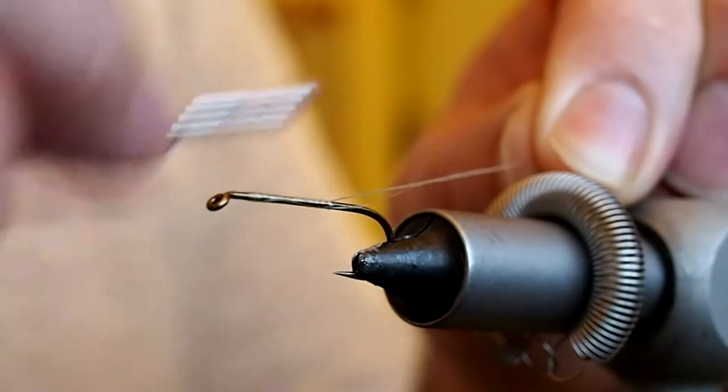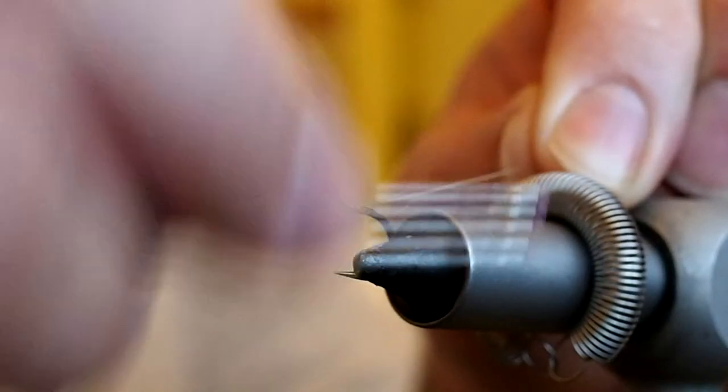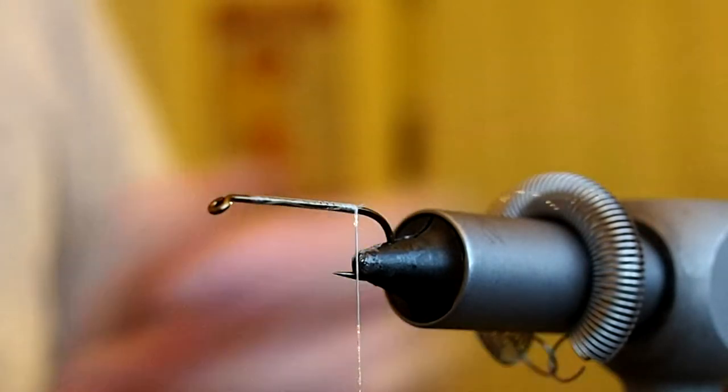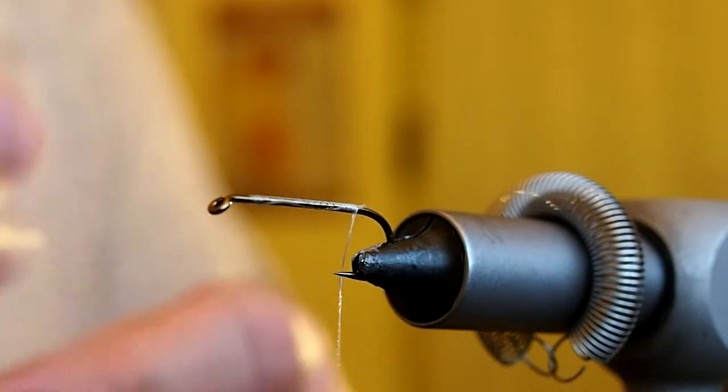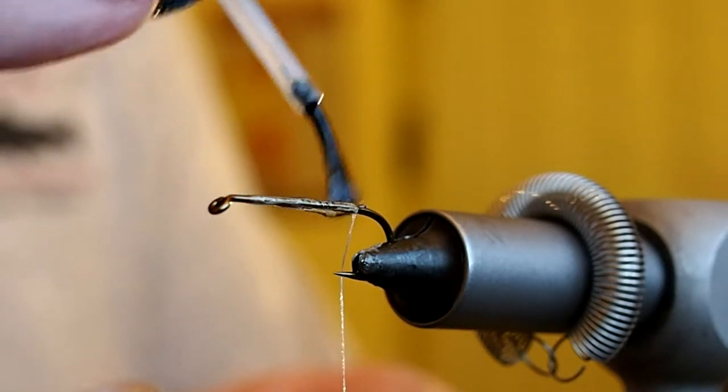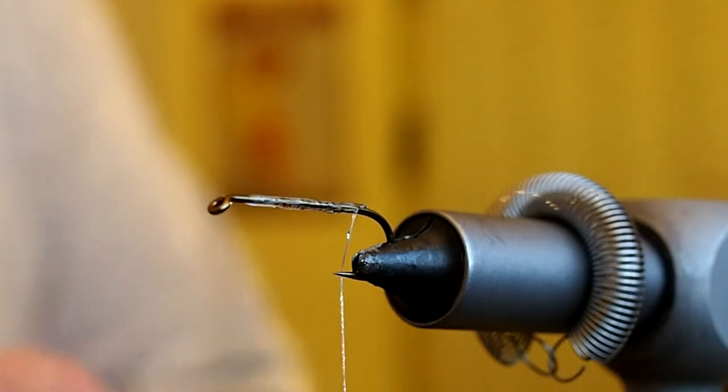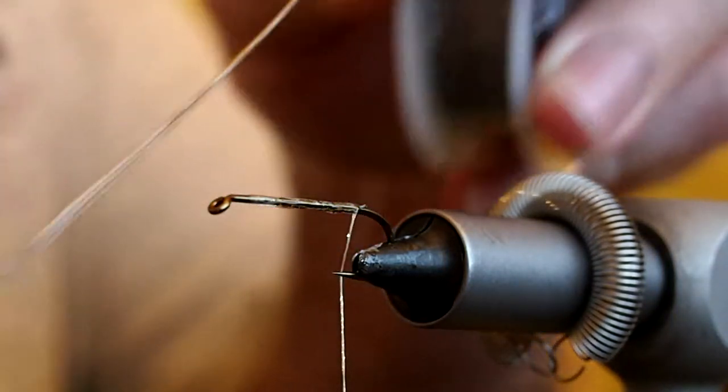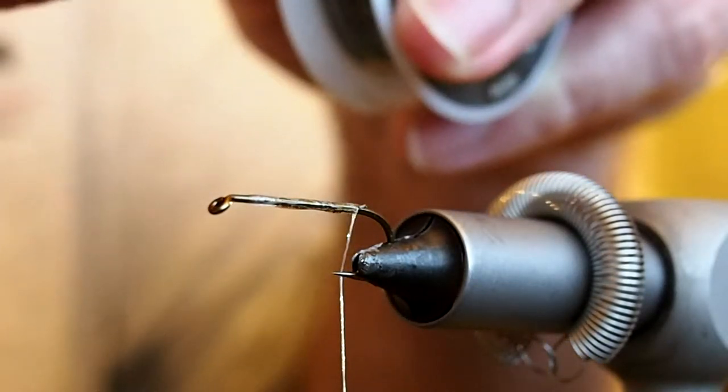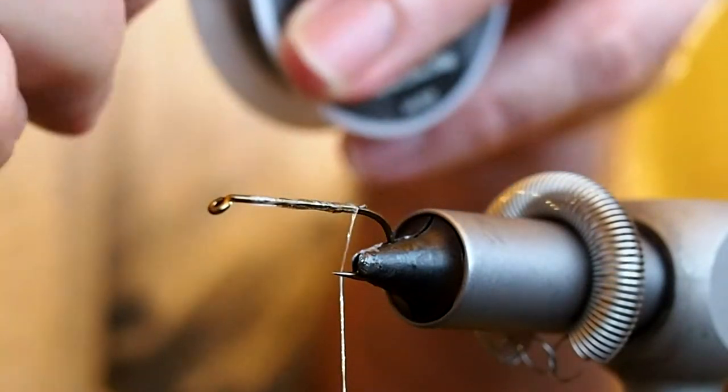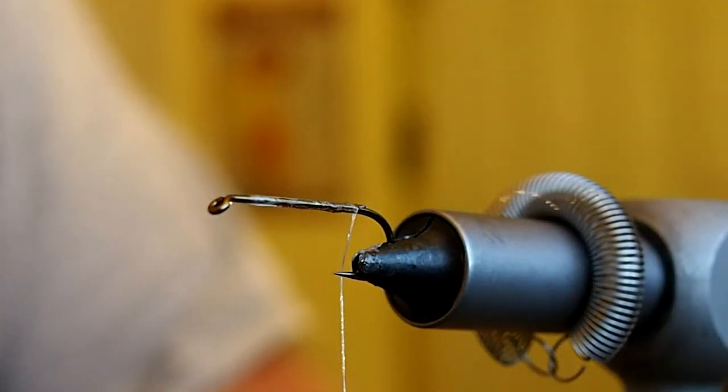And bring our thread down and it calls to lacquer the hook because we're going to be adding some lead. So I'm going to go ahead and hit that with some Sally Hansen. And it calls for 9 wraps of lead. So I've just got some lead here that I'm going to flatten with my fingernail.